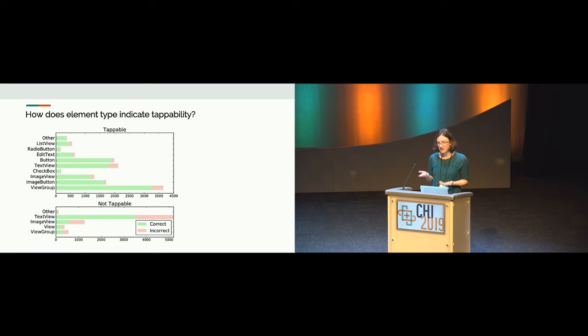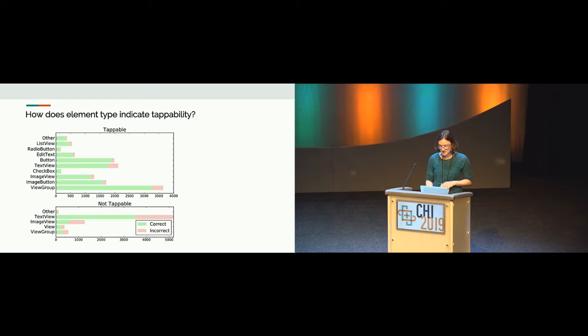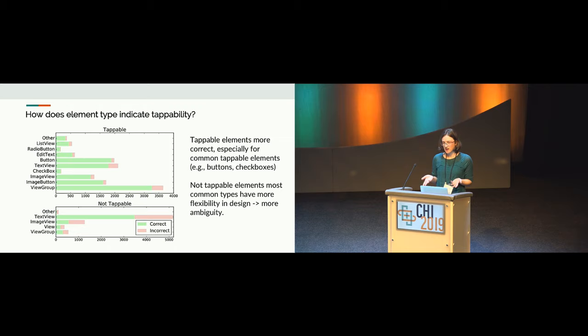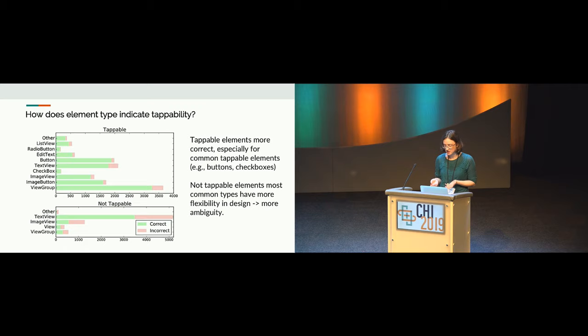Based on learned conventions, people have come to understand certain types of elements to be tappable, like a checkbox or a radio button. This chart shows the distribution of element types across tappable and not tappable elements, as well as the proportion of correct labels within each type. Common tappable elements like buttons and checkboxes were labeled most correctly. For not tappable elements, the most common types were text view and image view, which allow for more flexibility in design, and potentially unconventional styles may make an element more prone to ambiguity.